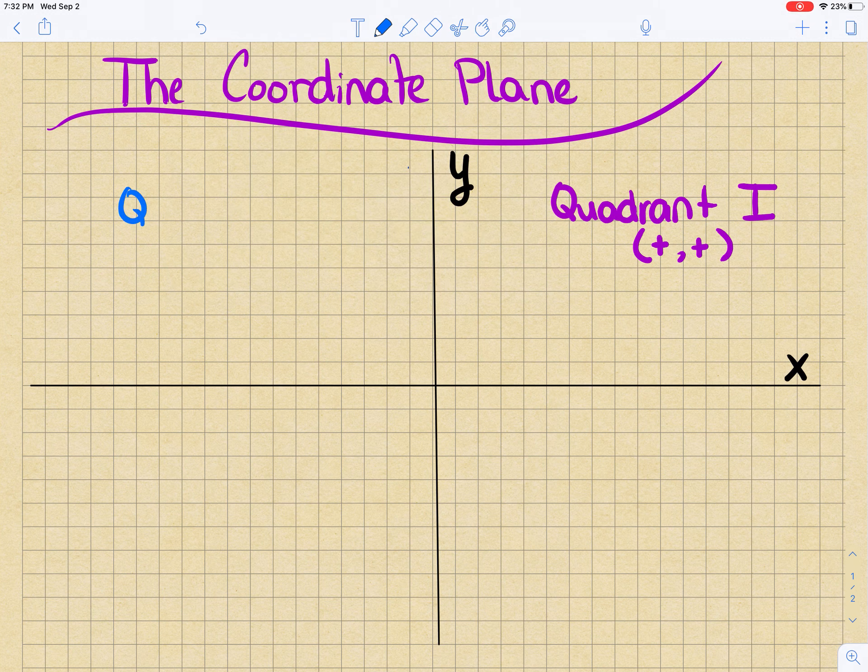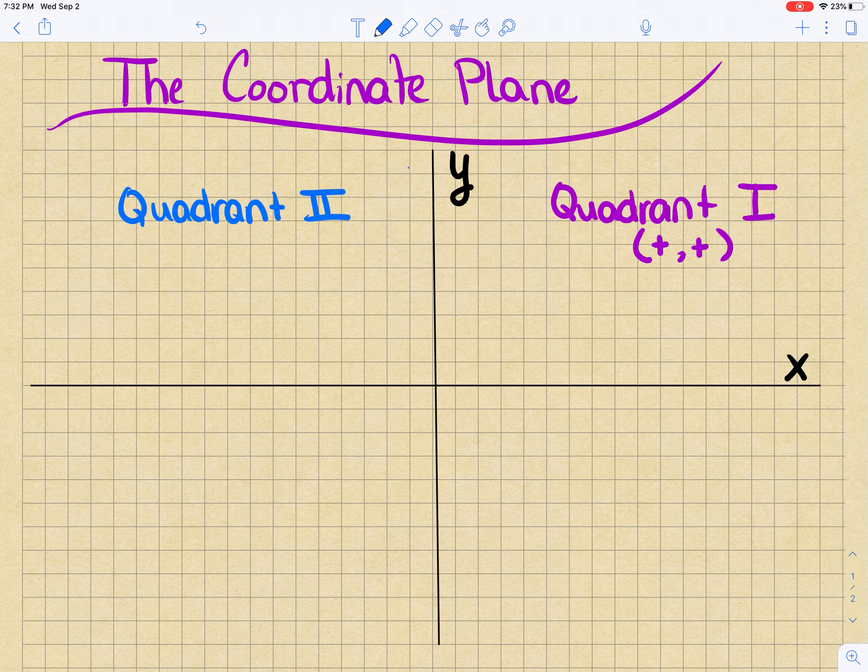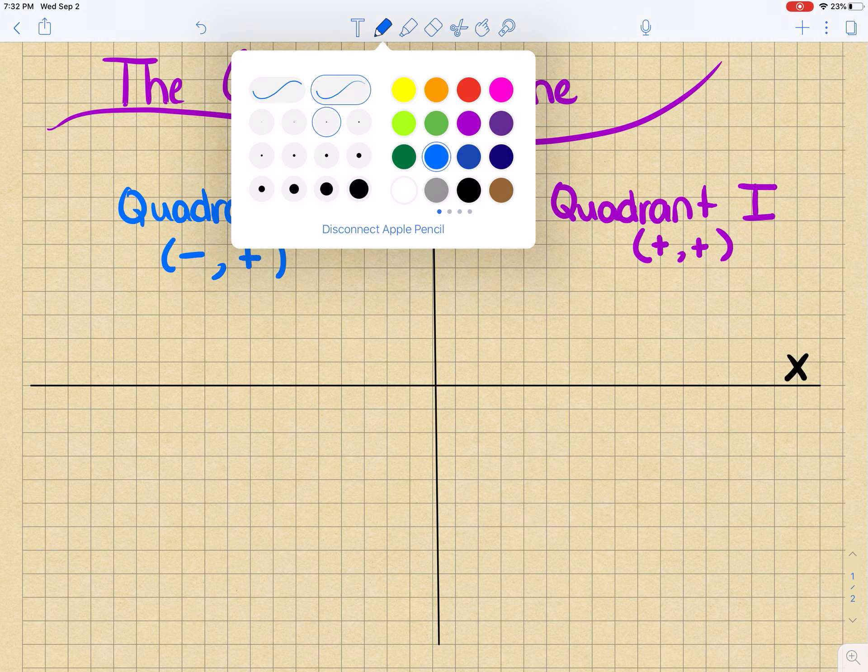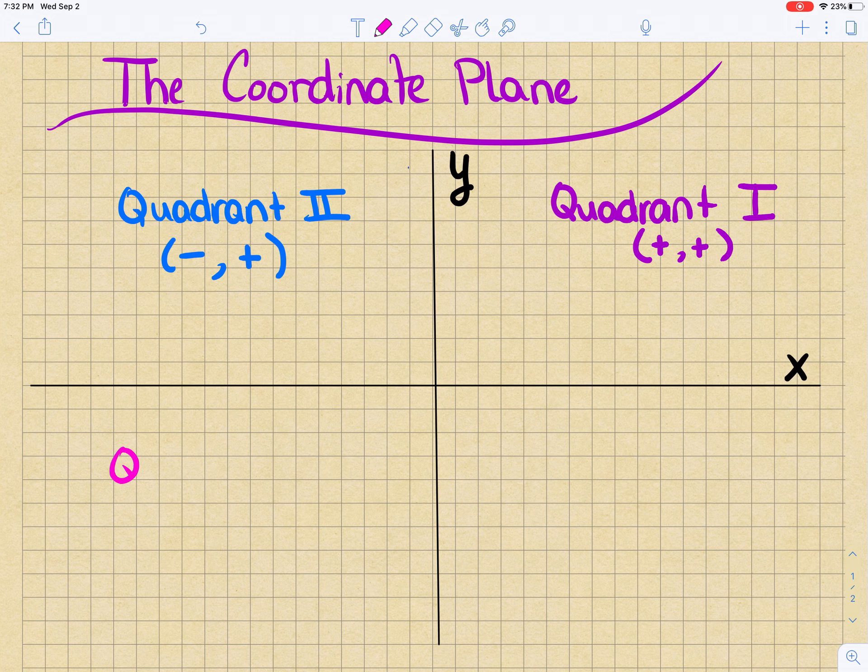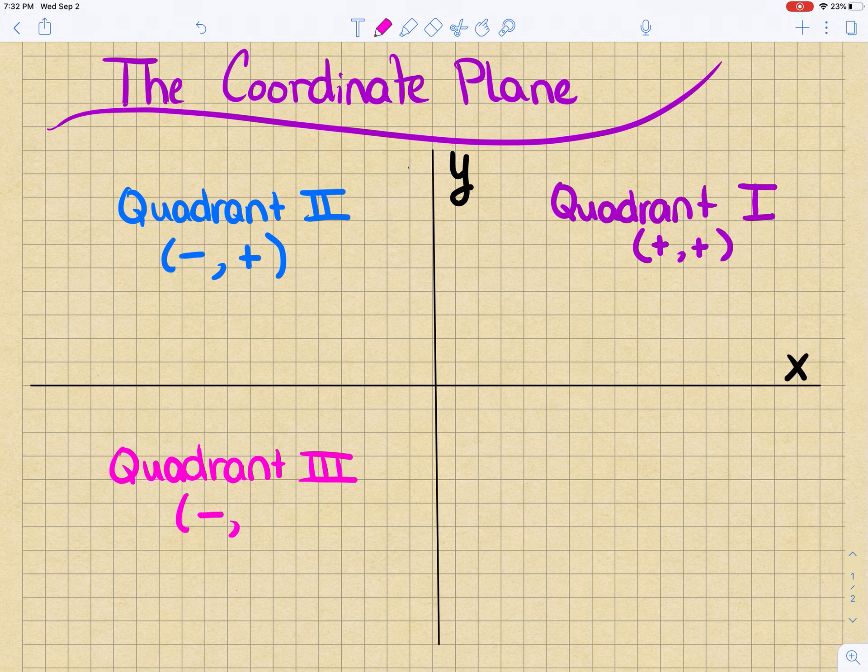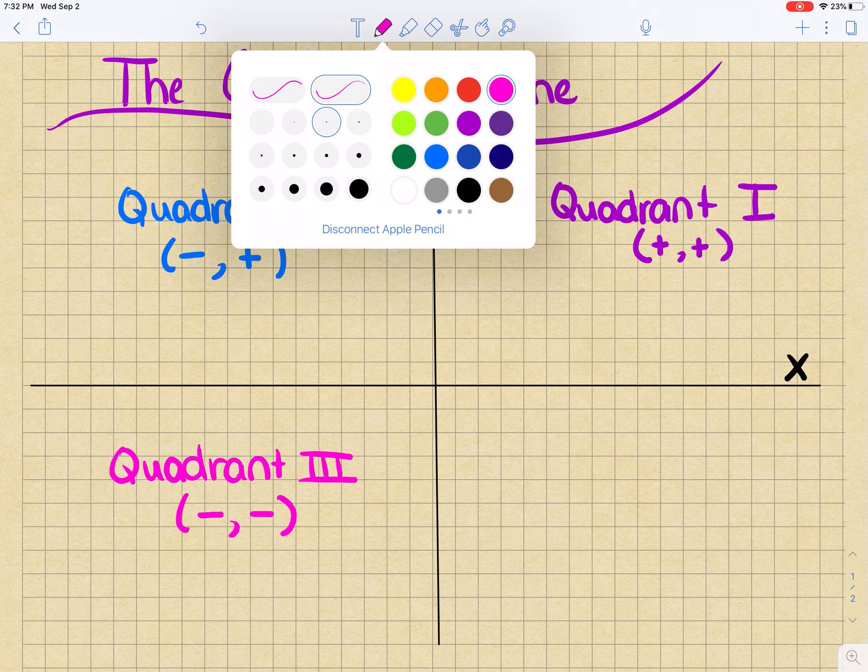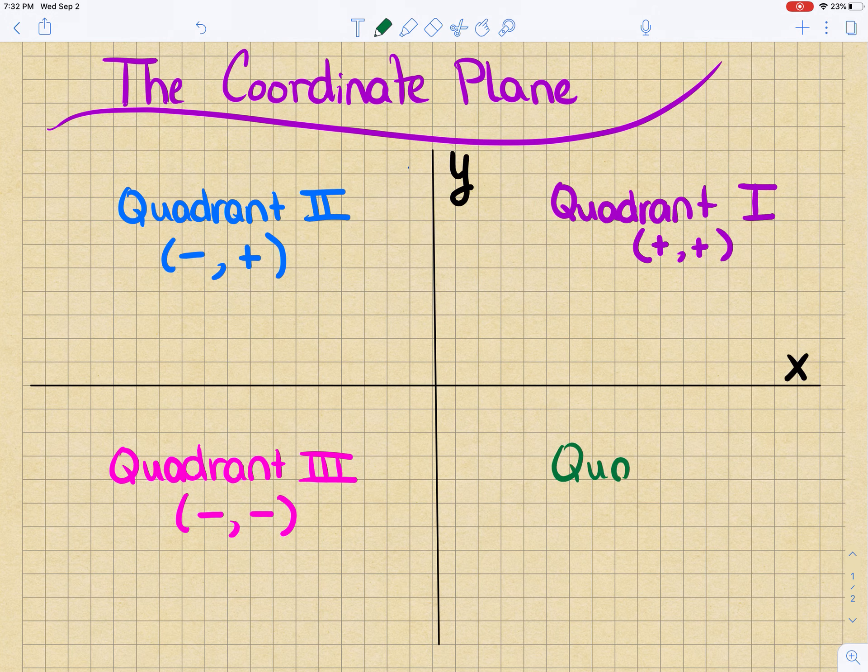Quadrant 2: the x is negative and the y is positive. Quadrant 3: both the x and the y are negative. And then quadrant 4: the x is positive and the y is negative.